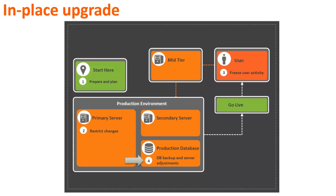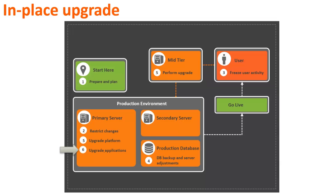You must revert these changes during the go live stage. In the fifth stage, upgrade the platform components. Ensure that you follow the sequence provided in the product documentation. In the sixth stage, upgrade the application components. Ensure that you follow the sequence provided in the product documentation. In stage 7, complete the post-upgrade activities. In stage 8, upgrade the secondary servers.